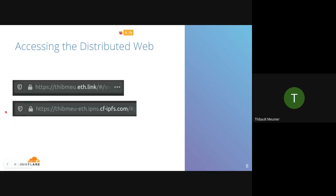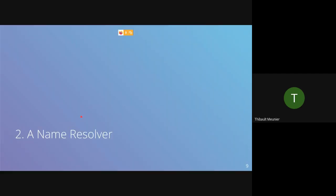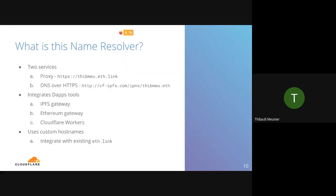In the end, you get tbmr.eth.link, a website accessible directly in a web browser via HTTPS, and also an IPFS gateway — in this case Cloudflare's IPFS gateway — where you can access your .eth domain tbmr.eth.